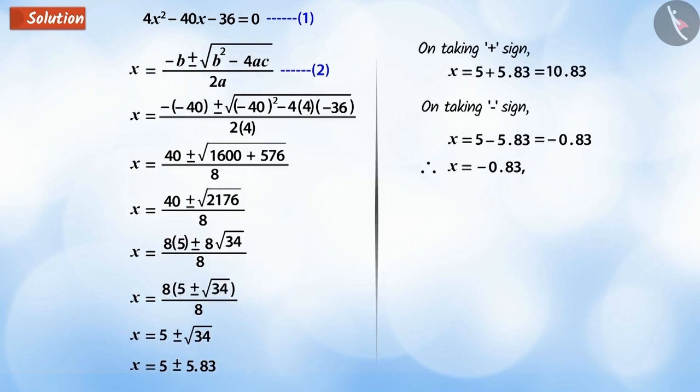That is, x equals minus 0.83 or x equals 10.83. Because x is the speed of current, therefore it cannot be negative.